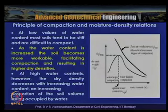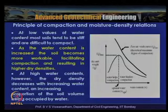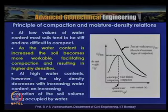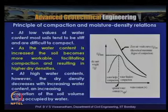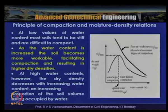At higher water contents, dry density decreases because an increasing proportion of the soil volume is occupied by water. Since the mass density of water ρ_w is much less than ρ_s, the overall density decreases. Thus at low water contents soils are stiff and hard to compact, while increasing water content makes the soil more workable and facilitates compaction.